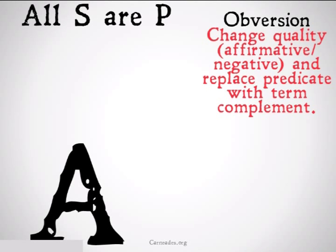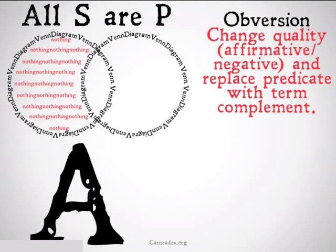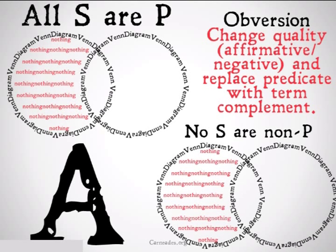For an A statement — 'All S are P' — we fill in our diagram as normal. The obverse of that would be 'No S are non-P.' Nothing that's in the S circle is a non-P, so our diagrams look the same. It's a valid form of argument.